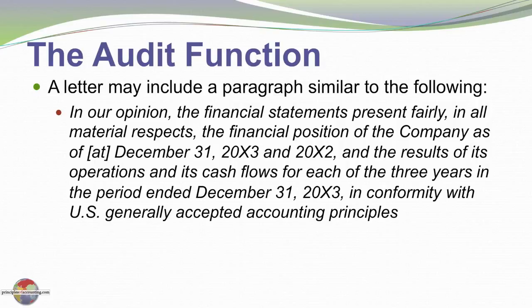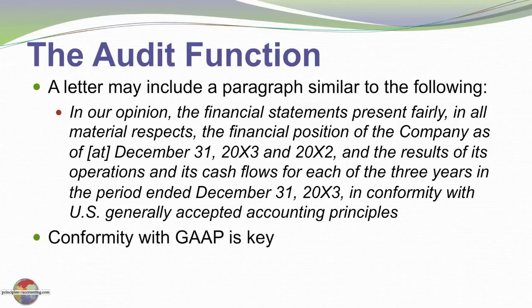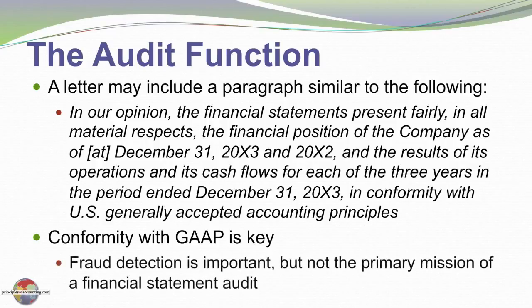'and the results of operations and cash flows for each of the three years in the period ending, in this case 20X3, in conformity with U.S. generally accepted accounting principles.' So importantly, what the auditor does is issue an opinion that the financial reports comply with generally accepted accounting principles, thereby presenting fairly the results of operations and financial position of the firm. Conformity with GAAP is the key. Fraud detection is important, but it's secondary to reporting on the fairness of financial statements.